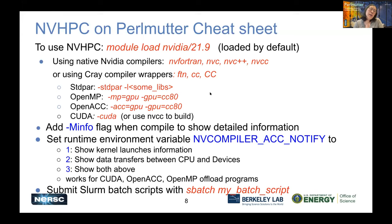We recommend using the -Minfo flag when compiling — it shows detailed compilation information. There's also the NV_COMPILERACCNOTIFY flag, which you can set to 1, 2, or 3. It shows kernel launches, data transfers, etc., and works for CUDA, OpenACC, and OpenMP offload programs. Then prepare an sbatch batch script and submit with sbatch myscript.